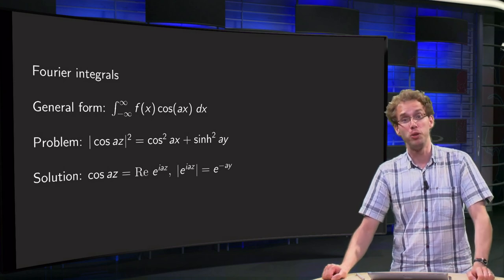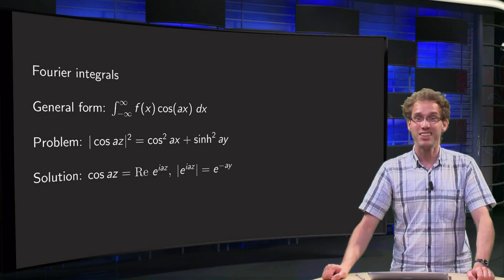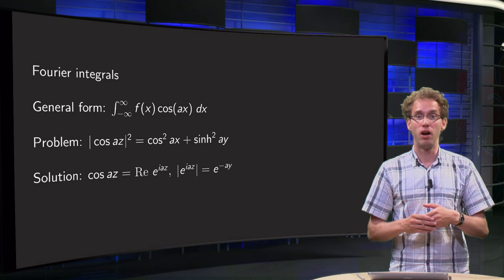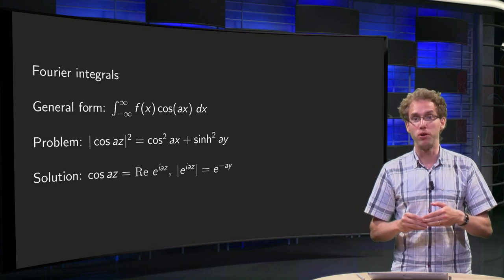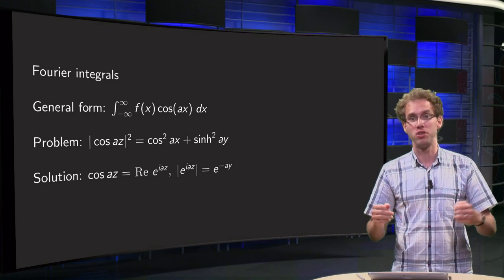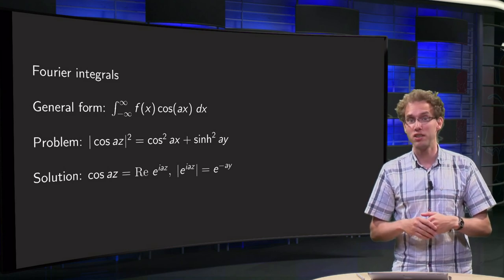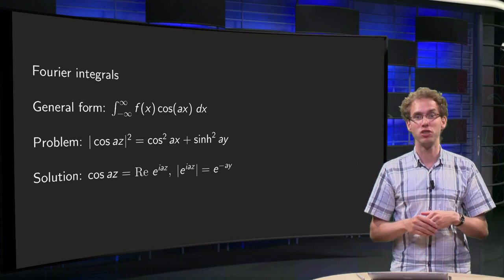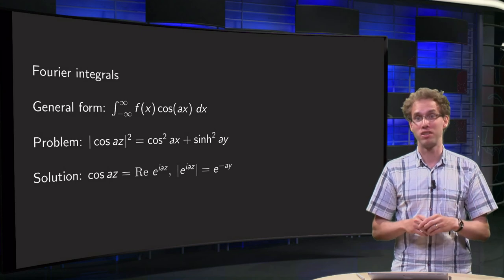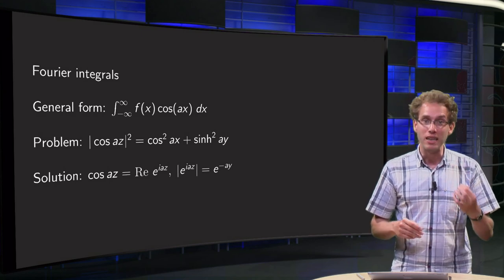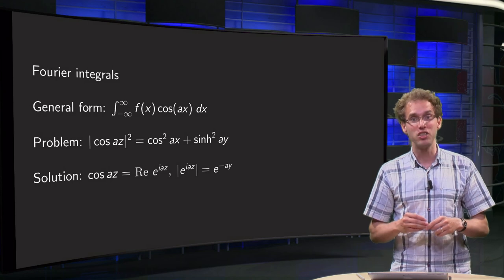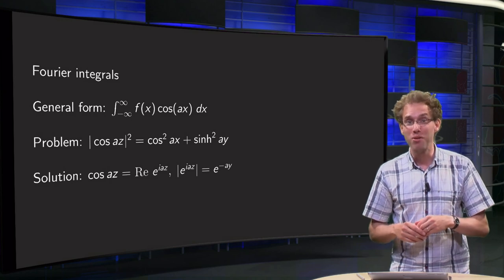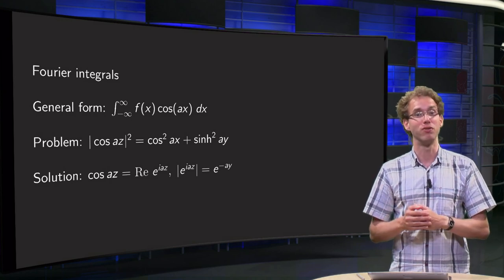When applying Fourier transforms, you may encounter certain types of integrals when you try to transform back: a quotient of a sine or cosine and some polynomials. How can you compute such an integral? In this video, you will see how you can choose an appropriate complex function f(z) for this type of integrals, which allows us to use contour integration for Fourier integrals.